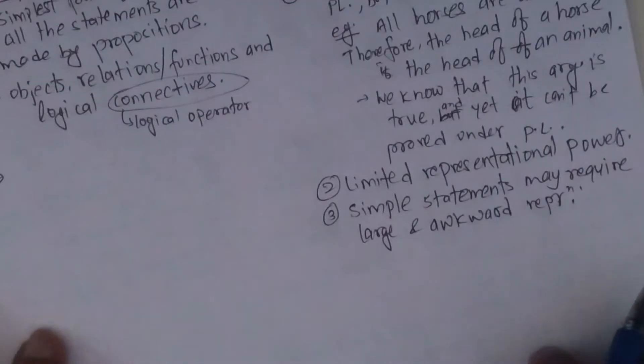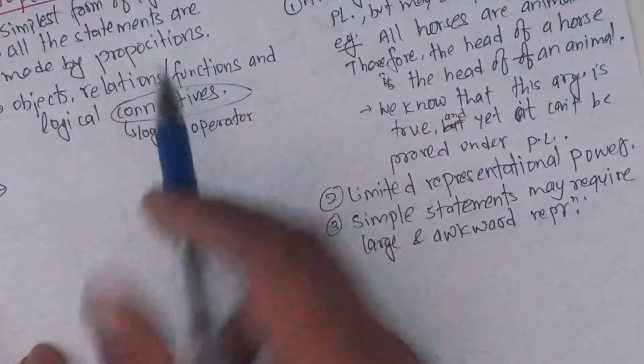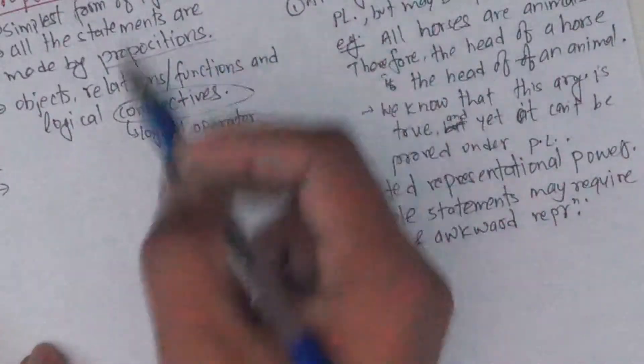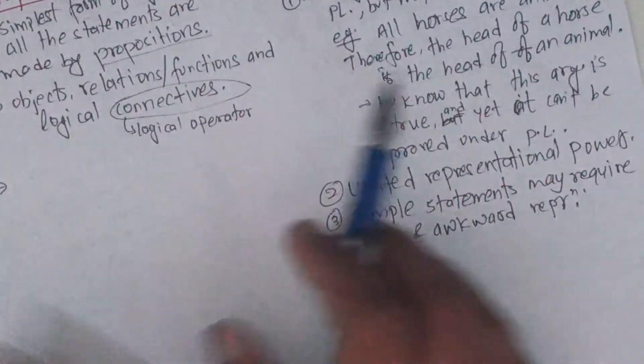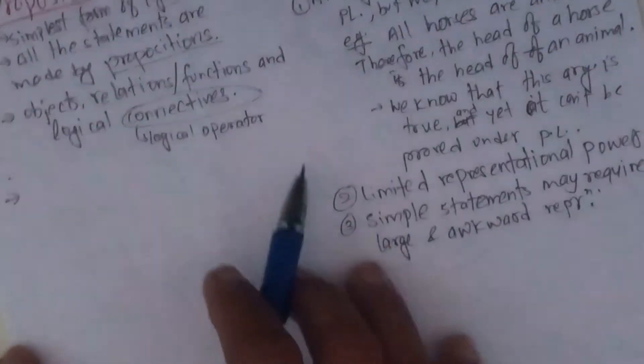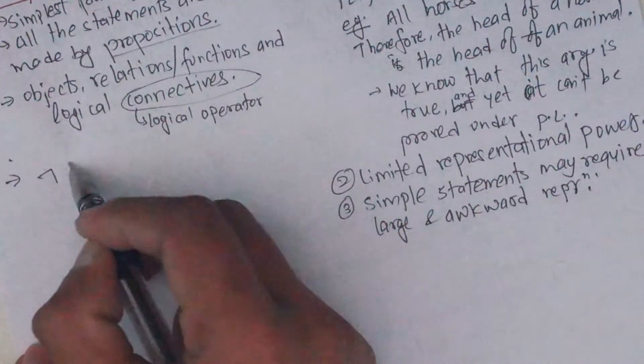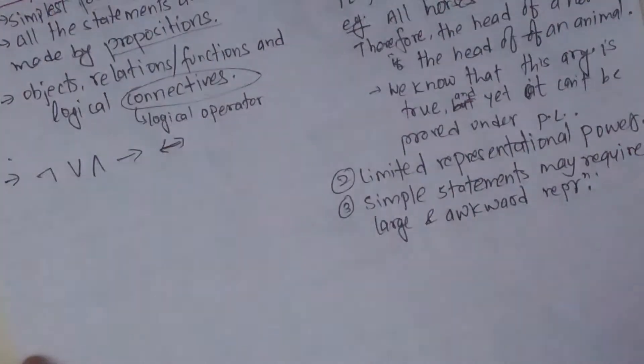Basic propositional logic - simple form of logic. All statements are made by propositions, functions, and logical connectives. Logical operators include not, or, and, implies, and biconditional.